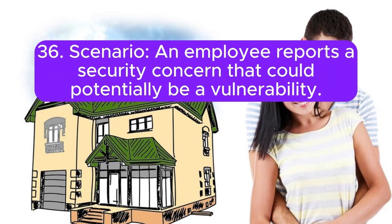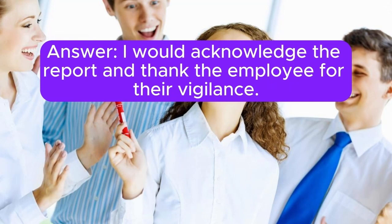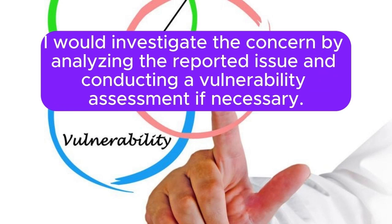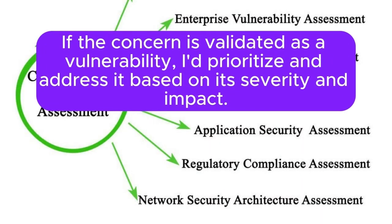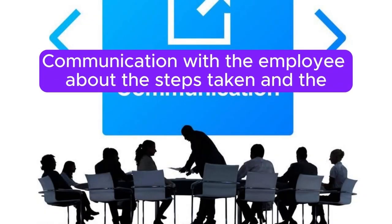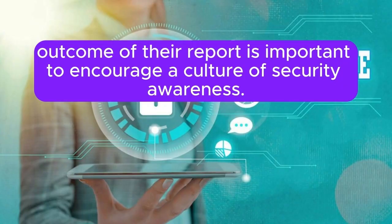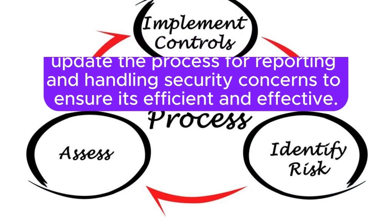Scenario 36: An employee reports a security concern that could potentially be a vulnerability. How do you handle this report? I would acknowledge the report and thank the employee for their vigilance. I would investigate the concern by analyzing the reported issue and conducting a vulnerability assessment if necessary. If the concern is validated as a vulnerability, I'd prioritize and address it based on its severity and impact. Communication with the employee about the steps taken and the outcome of their report is important to encourage a culture of security awareness. Additionally, I would review and update the process for reporting and handling security concerns to ensure it's efficient and effective.